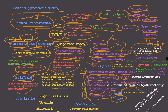To recap: Stage 0 is carcinoma in situ; Stage 1 is confined to the cervix; Stage 2 is beyond the cervix but not to the pelvic side walls or lower third of the vagina; Stage 3 invades the pelvic wall or lower third of the vagina; Stage 4 is beyond the pelvis — with metastasis to the rectum, bladder, or distant sites.